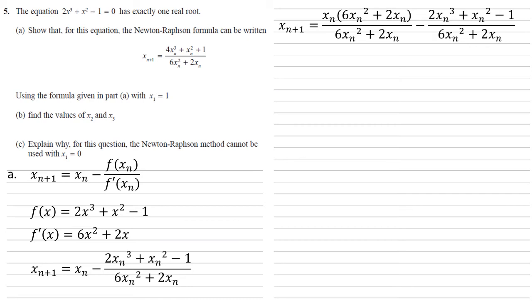Our left-hand fraction we're going to multiply by x n at the top. So we've now got 6x n cubed plus 2x n squared on the top. We've now got the same denominator for both of these fractions so that we can bring them together.